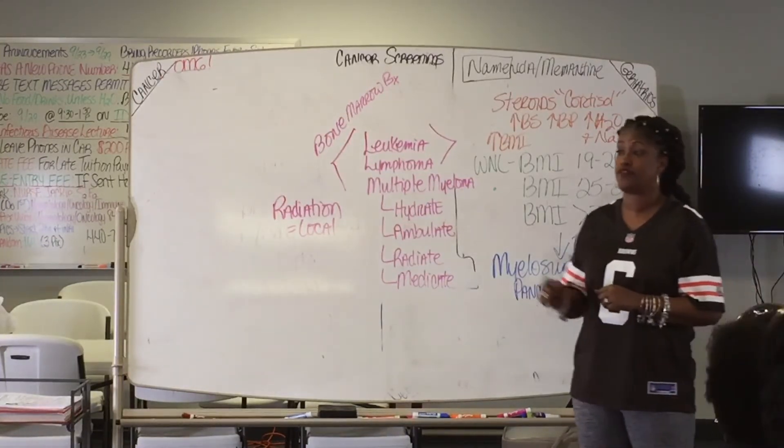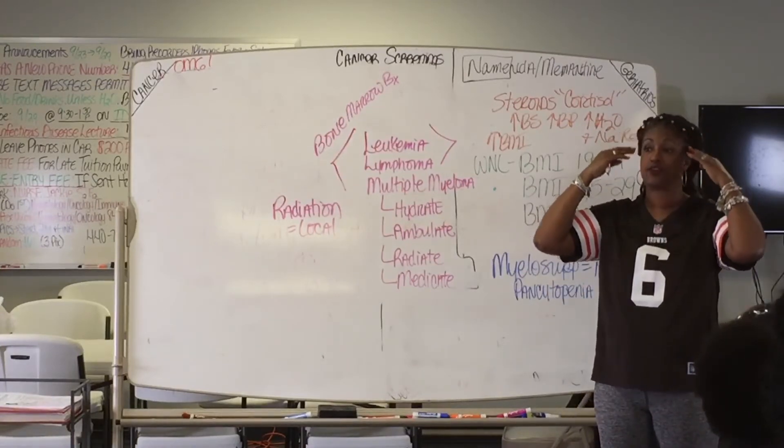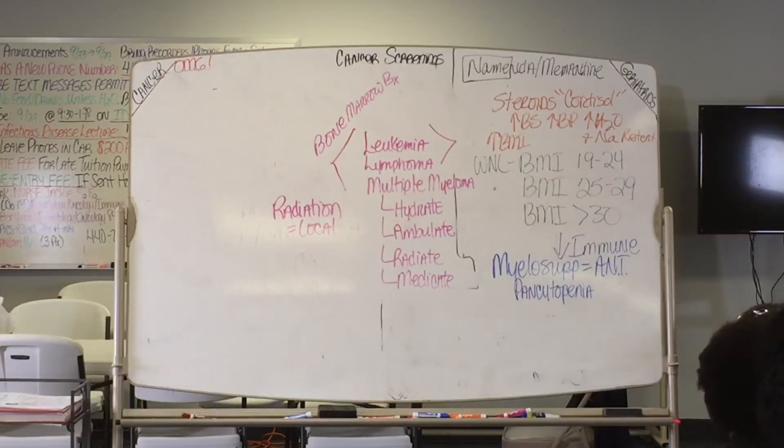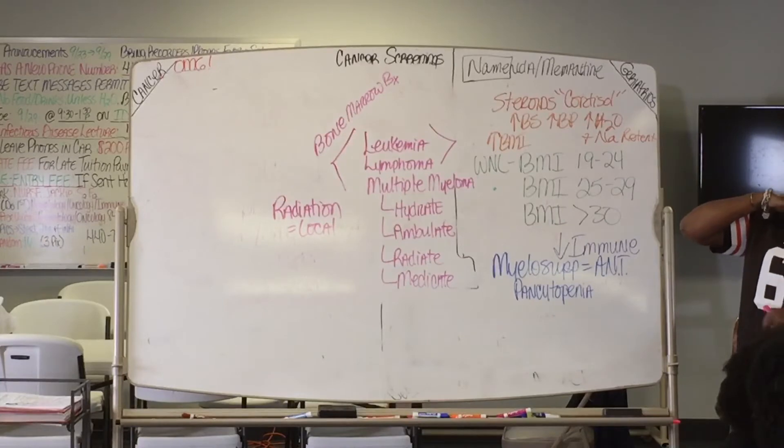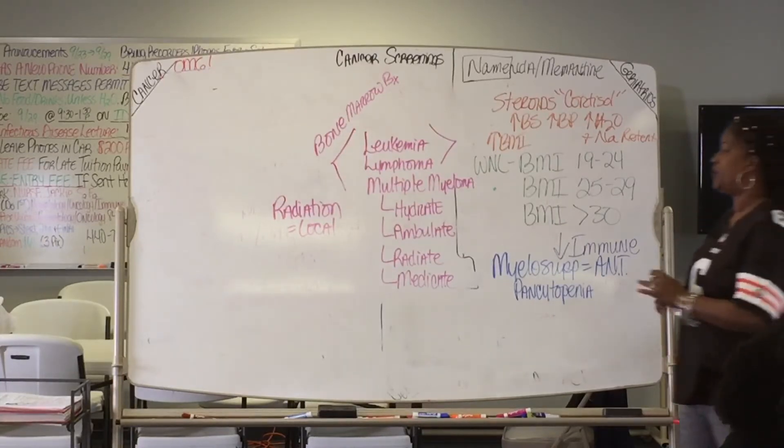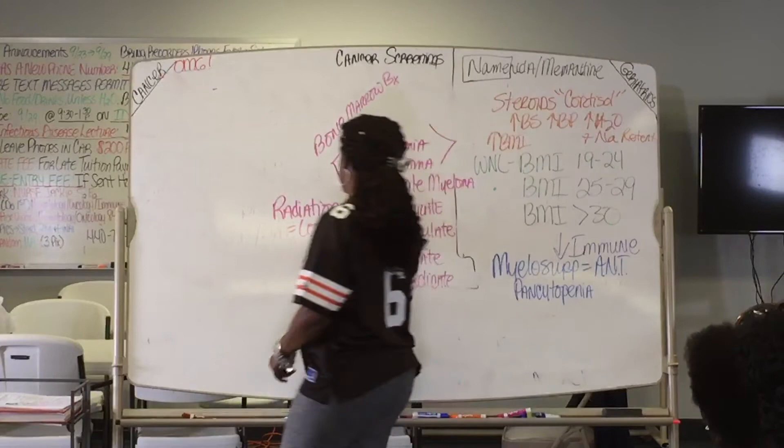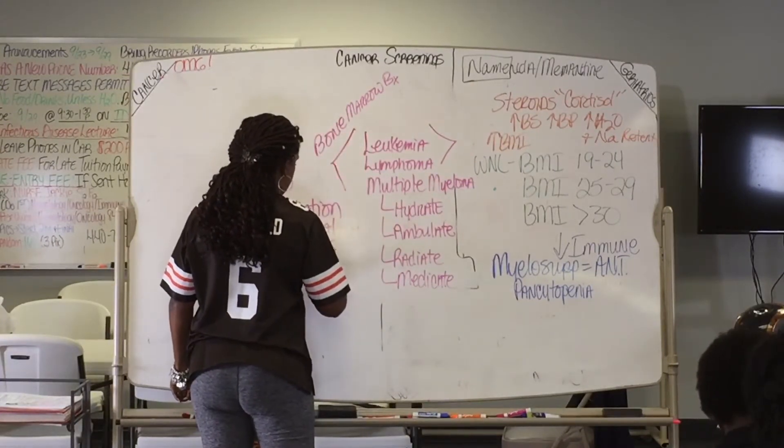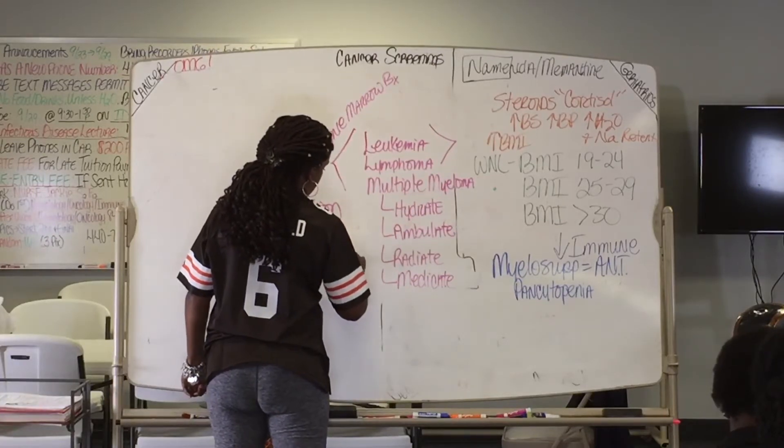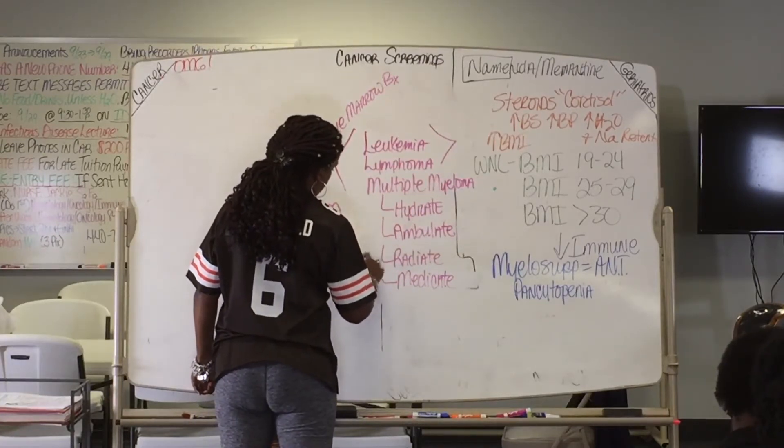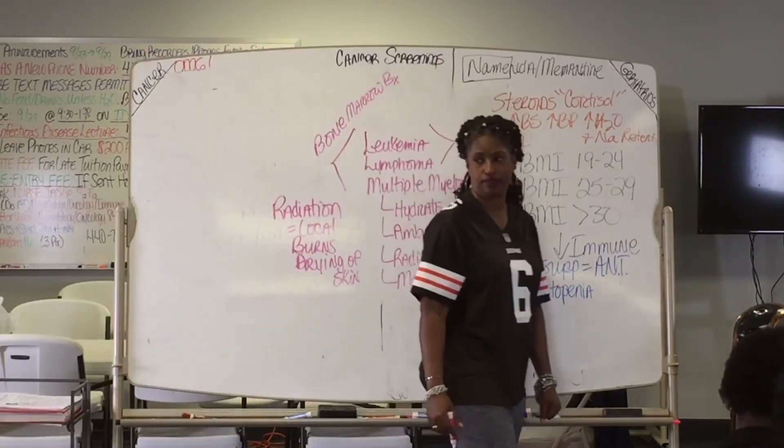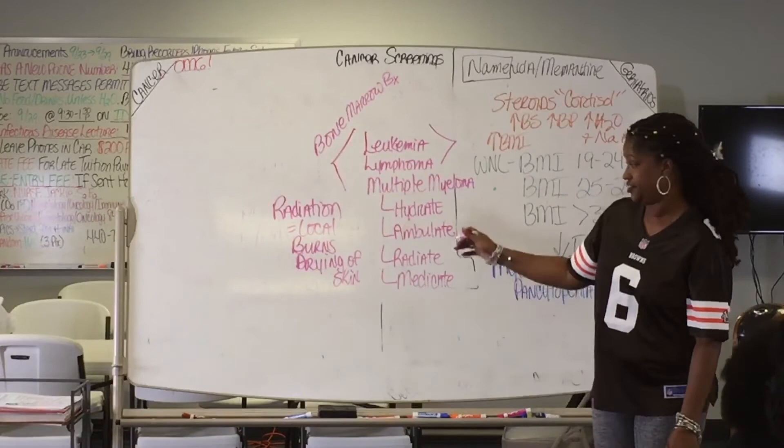So wherever I angle the radiation, that's where the side effects are going to be. If it's brain cancer, then everywhere in here is going to be affected, right? It's my brain, so it's local. If I do breast cancer, everything from here to here will be affected. Now, when I say local side effects, burns and drying of skin, that's the local side effects. Remember I told you that chemo was systemic? This is local.